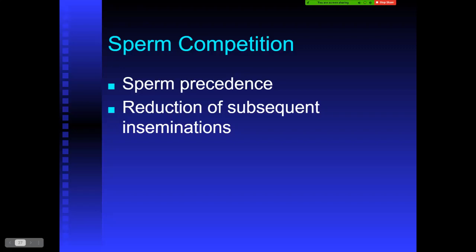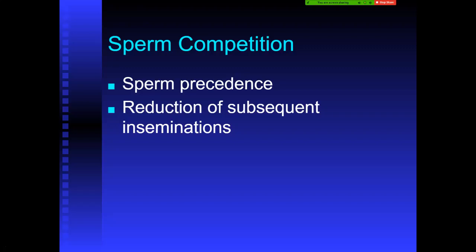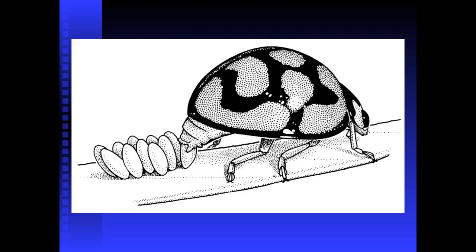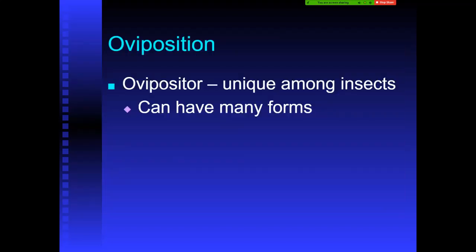Gorillas, by contrast, control sperm competition through brute strength — a dominant harem leader controls reproduction until he can no longer do so. Sperm competition is a widespread biological idea. In some insects, females can store sperm indefinitely and fertilize eggs when they choose. In extreme cases, females can almost select which sperm they want after mating with more than one male.